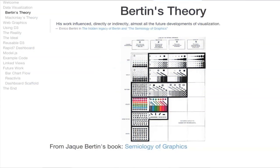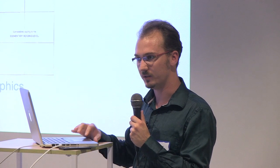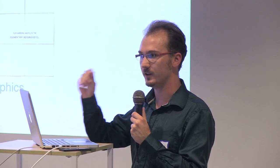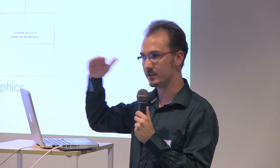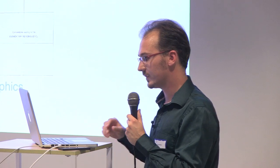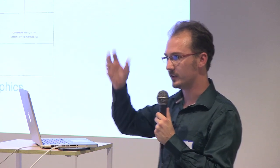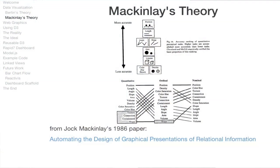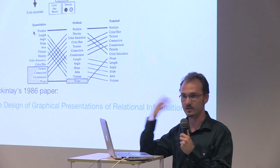Jacques Bertin identifies various kinds of tasks in visualization: perceiving nominal data, meaning different entities; perceiving ordered data, which is different entities that have some ordering within them; and perceiving quantitative values. Jacques McKinley says quantitative data, ordinal data, and nominal data each have priorities of visual encodings. Position — like the x, y coordinates — is the strongest and can represent any kind of data.